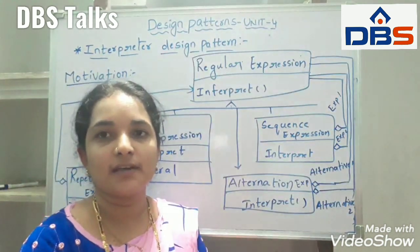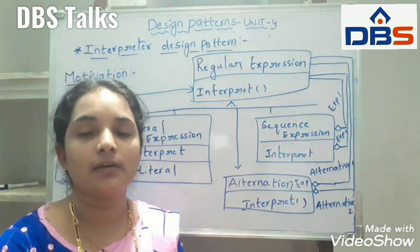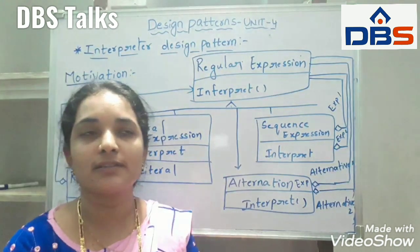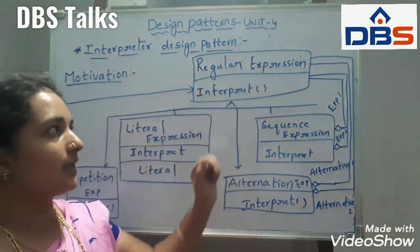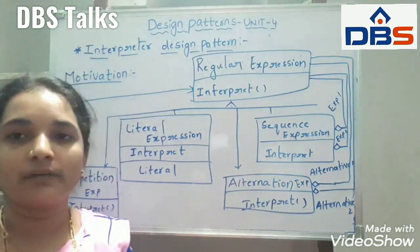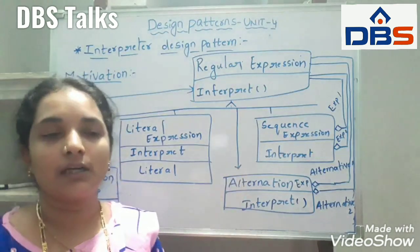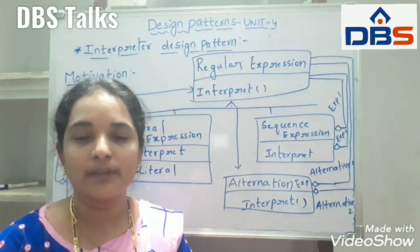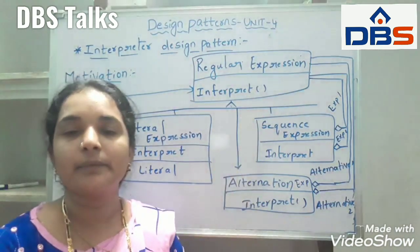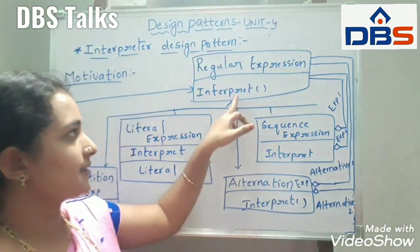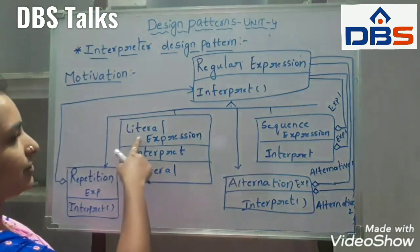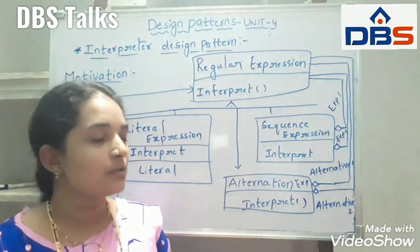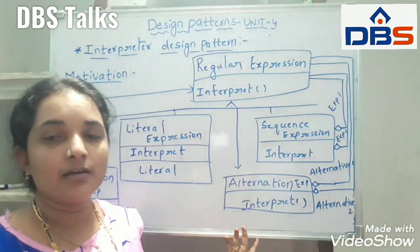Next, coming to the diagram. This is the diagram in the motivation. We told that in the motivation, we have used some regular expressions. This regular expression is nothing but it is an abstract class. If you see here, regular expression is the abstract class — I have the interface, that is interpret. Interpret converts whatever context information is available into understandable form. It acts as an interface. Here we are having subclasses: literal expression, sequence expression, alternation expression, and repetition expression.